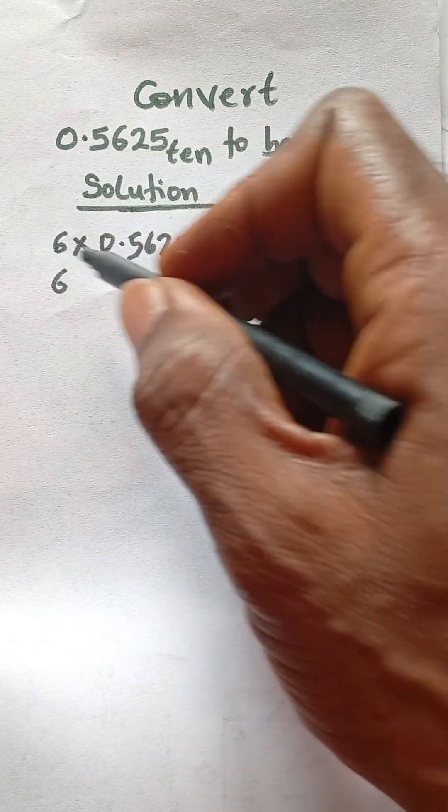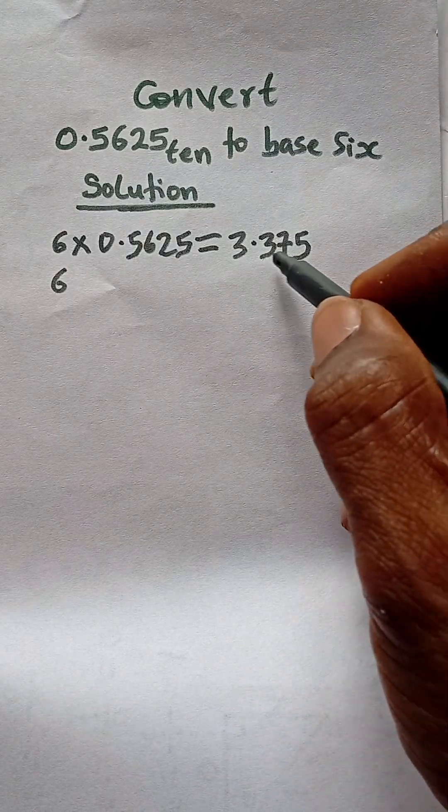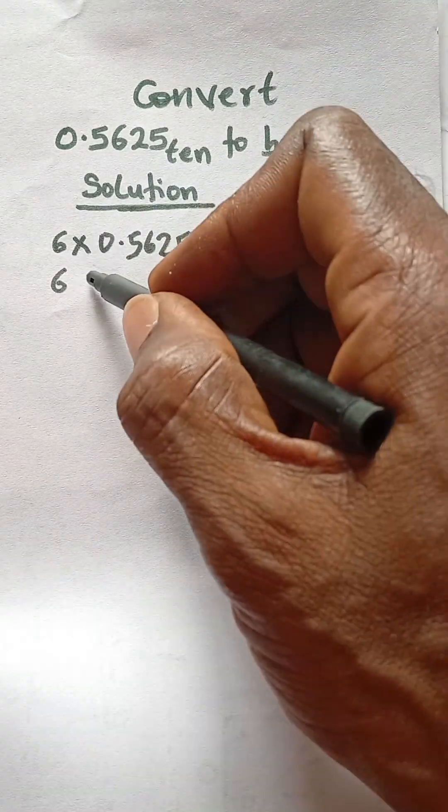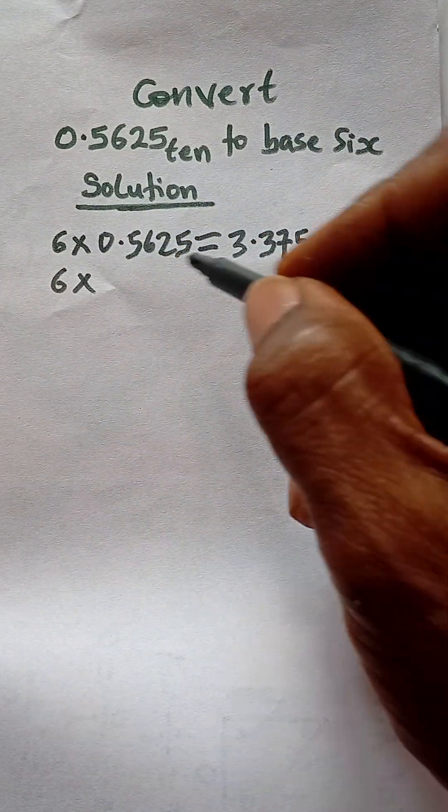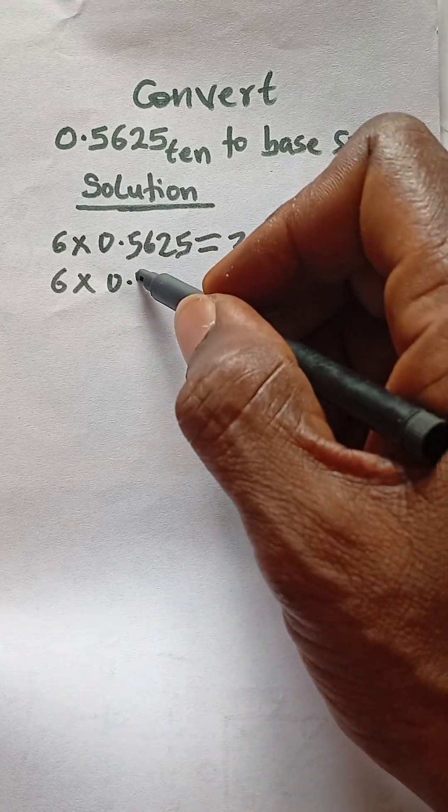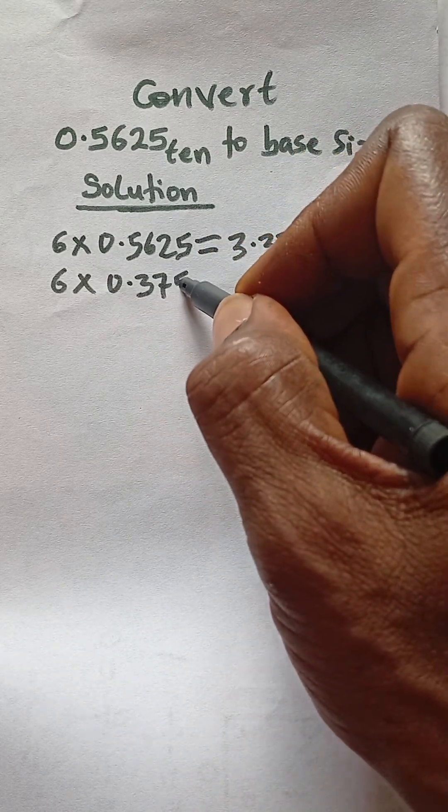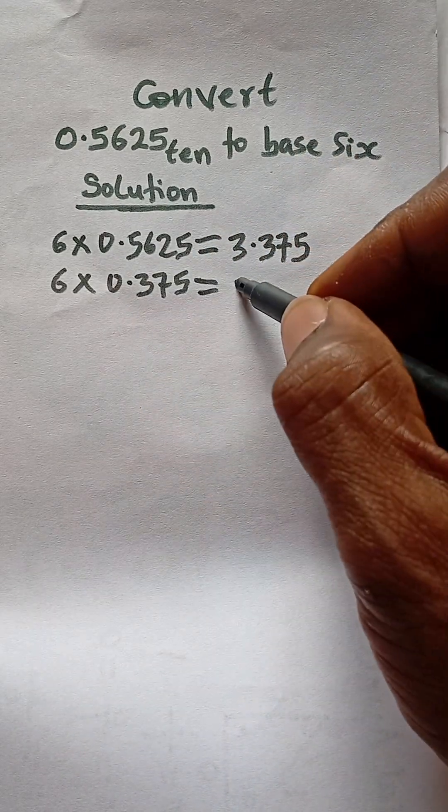Take 6, the base 6, and multiply by the decimal part 0.375, and that will give us 2.25.